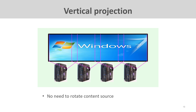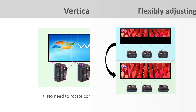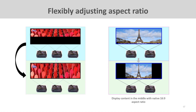If source content needs to be changed constantly — for example in a retail space — you can simply switch your source from one to the other and it's ready to play, without needing to modify the source content, saving significant time and effort. You can also use the video wall controller to adjust the aspect ratio as needed, for example stretching the image to fit the full screen or keeping the original ratio and shifting it to the center.